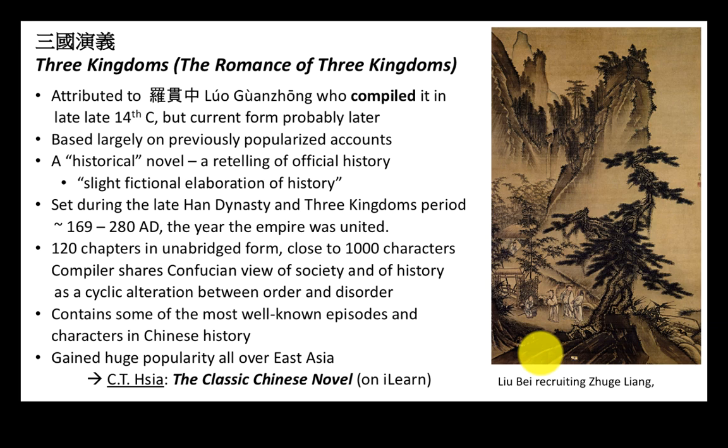It's set during the late Han Dynasty, the Han Dynasty being the first great dynasty, the first great empire in Chinese history, sort of rivaling the Roman Empire in terms of length and size and power. It consists of 120 chapters in its unabridged form, but we are reading it in an abridged version. Even so, there are still a lot of characters — close to a thousand — though not all of them are of equal importance, and we will focus on the most important ones.